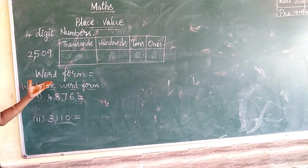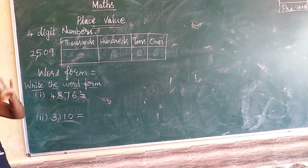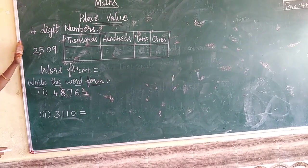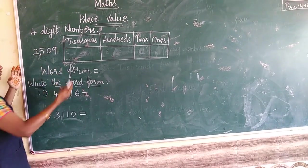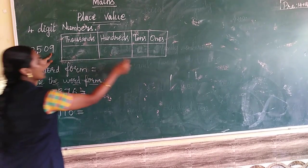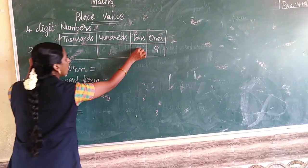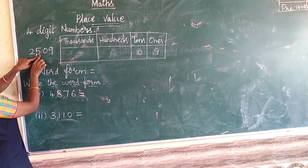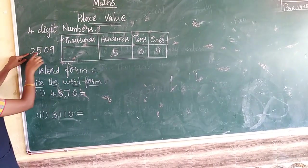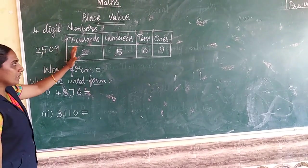Now we are going to write both forms. We already know the 3-digit word form. Now we increase to the 1000s place. The highest place value is 1000. Apply the place value chart: the 1s place is 9, the 10s place is 0, the 100s place is 5, and the 1000s place is 2.